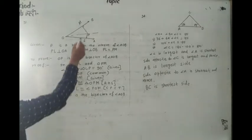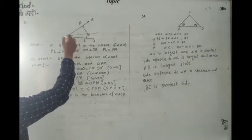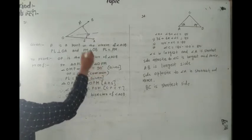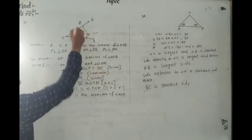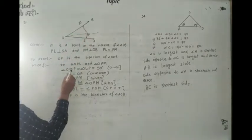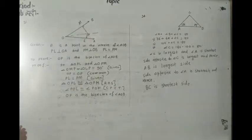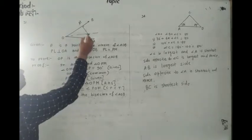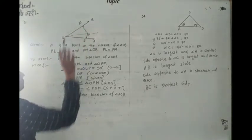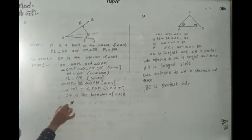In triangles OPL and OPM, angle OLP equal to angle OMP equal to 90 degrees. OP is equal to OP because it's a common side, and PL equal to PM is given. Therefore...